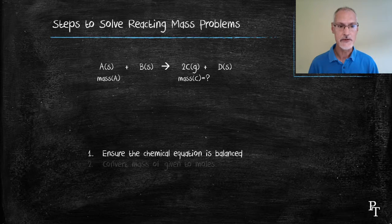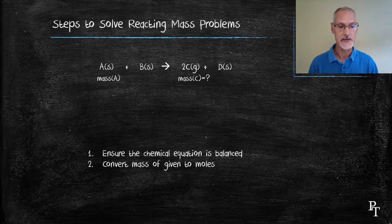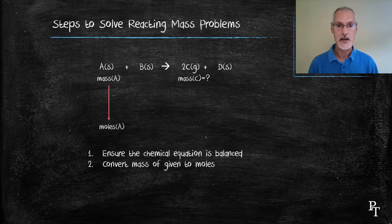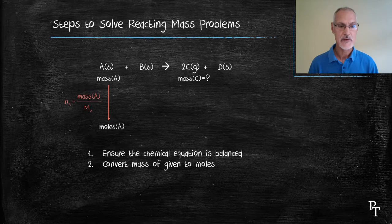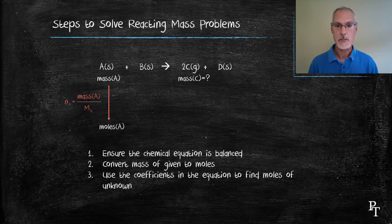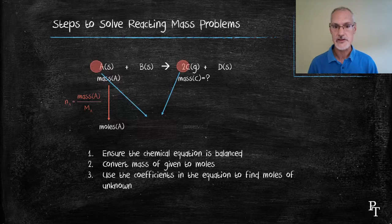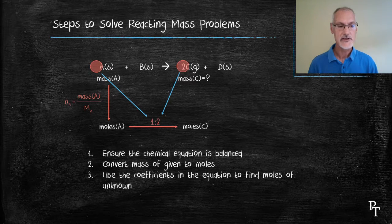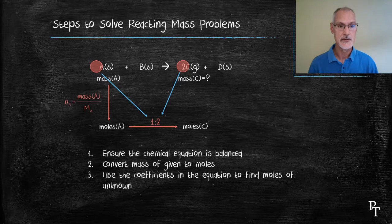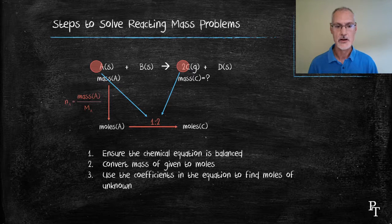Then, beginning with my known substance, substance A in this case, I'm going to convert that into moles. To do that, I use the equation number of moles equals mass over molar mass of substance A. Next thing I'm going to do with those moles of substance A is predict how many moles of substance C will be produced. To do that, I consult the coefficients of each of these chemicals. In this case, the coefficient for A is 1, and the coefficient for substance C is 2. Hence, they will be in a 1 to 2 ratio. Moles of C will be twice as big as the moles of A.